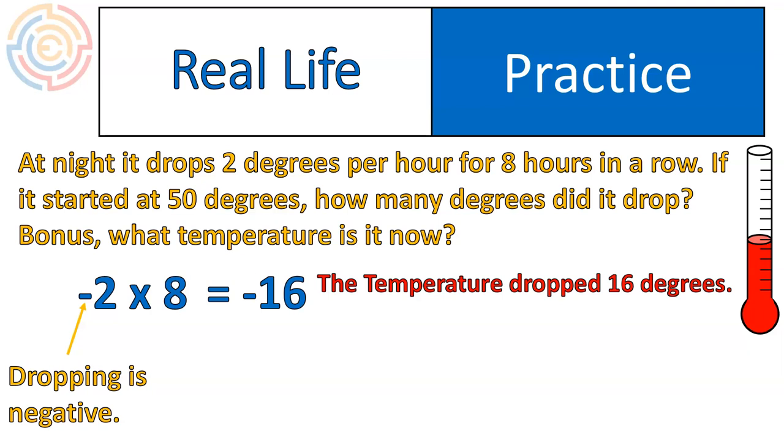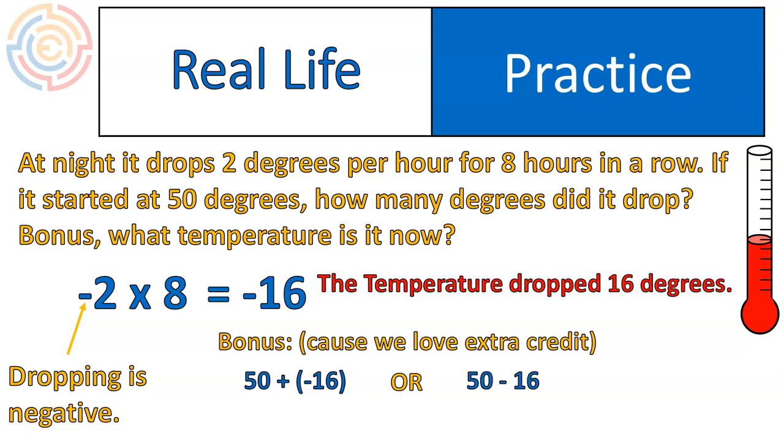How many degrees did it drop? Notice we didn't need to use where the temperature started to answer the first question. How many degrees did it drop? It dropped 16 degrees. Went down by 2, down by 2, down by 2, eight times. It's going to drop 16 degrees. Now to answer the bonus question, because we love our extra credit, we're definitely going to need to know that it started at 50 degrees. So this is the way I would set that one up. I would say 50 degrees plus negative 16. Now if you want to do it a little bit easier, you could also say 50 minus 16, or you could convert, start at the first one and convert it over to the other one. You're starting at 50 degrees and you're losing 16 degrees or dropping 16 degrees. Either way, your answer is going to be that your final temperature is 34 degrees.